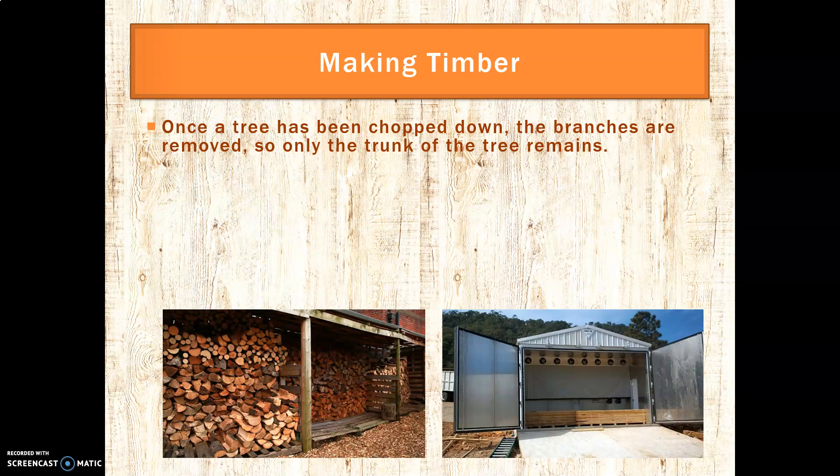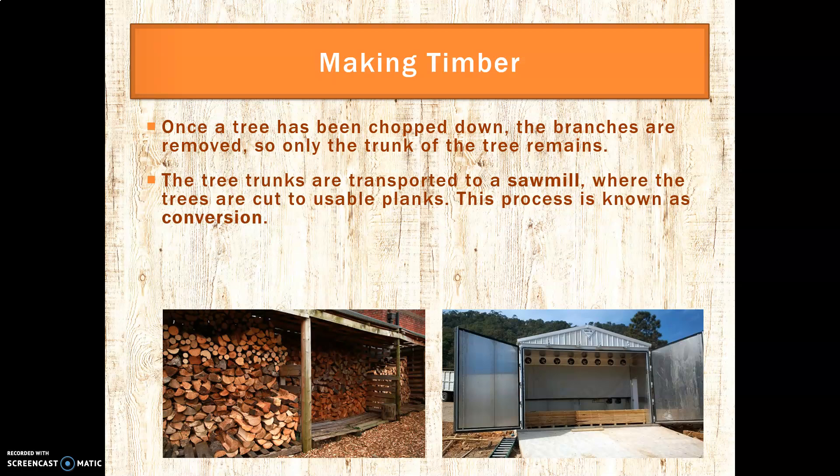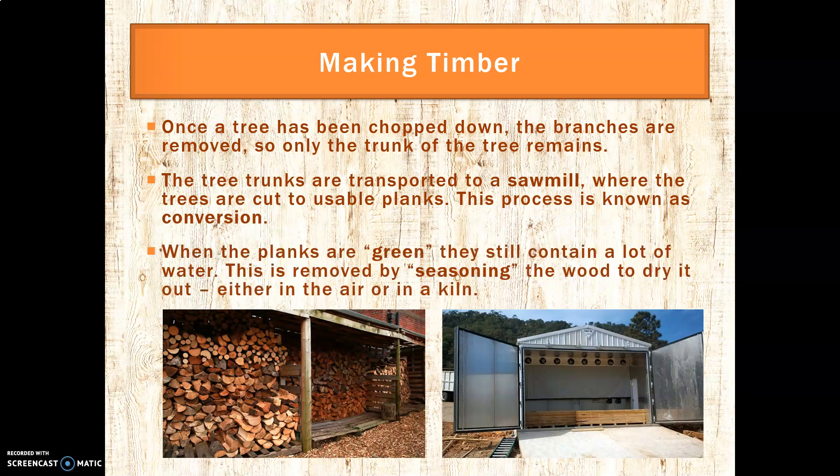When we are making timber, when the tree has been chopped down, the branches are removed and the trunk remains. When the trunks are transported to a sawmill, trees are cut into usable planks. This is called conversion. And those planks are green — they contain a lot of liquid, a lot of water and moisture. So that's not very useful to work with, so they need to have that water removed by seasoning.